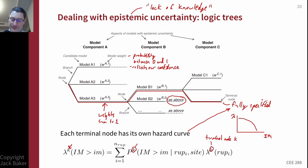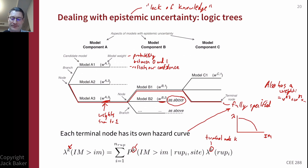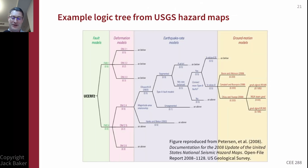Each terminal node also has a weight. In this case it's equal to W_A3 times W_B2 times so on — we take the weights associated with each branch and multiply them together. Each branch split is a conditional probability, conditional on what came before, so we multiply out all those conditional probabilities to get the terminal node weight. Because the branch weights all sum to one, the terminal node weights are also going to sum to one.